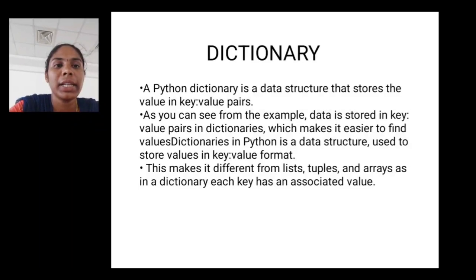A Python dictionary is a data structure that stores the value in key-value pairs. As you can see from the example, data is stored in key-value pairs in dictionary which makes it easier to find values. Dictionary in Python is a data structure used to store values in key-value pairs. This makes it different from a list, tuples and arrays, as in a dictionary each key has an associated value.